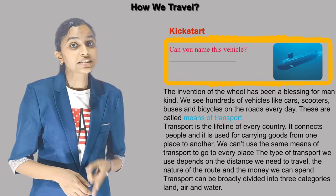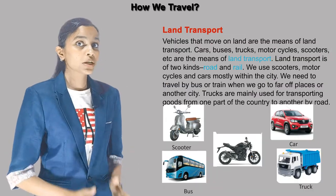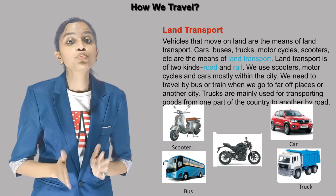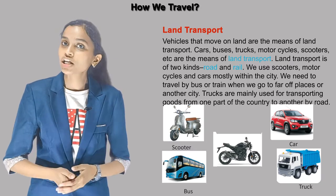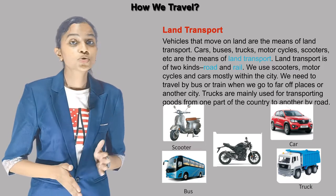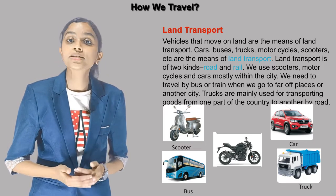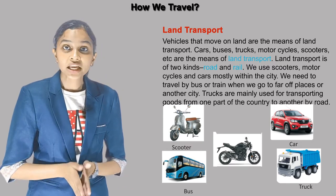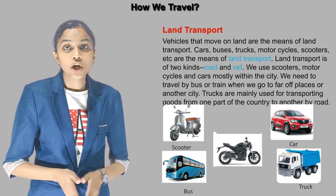The first one is land transport. Vehicles that move on land are the means of land transport. Cars, buses, trucks, motorcycles, scooters, etc. are the means of land transport.